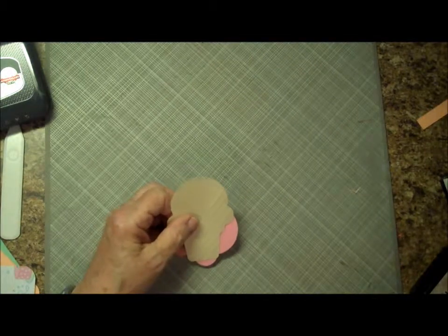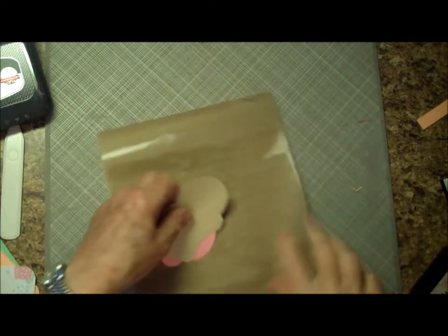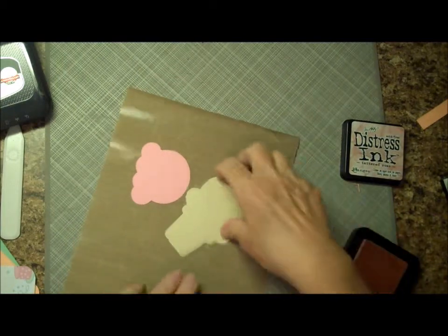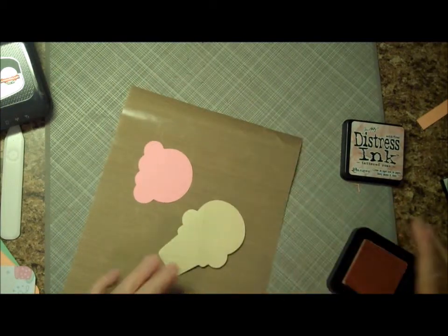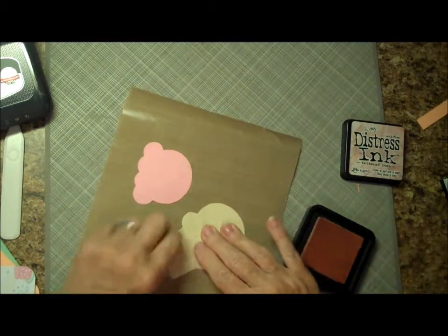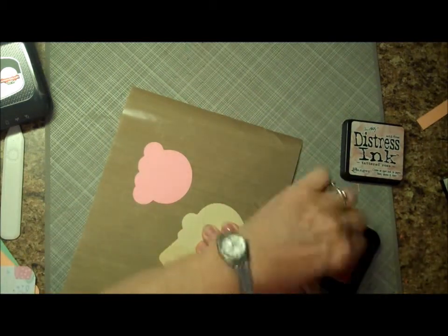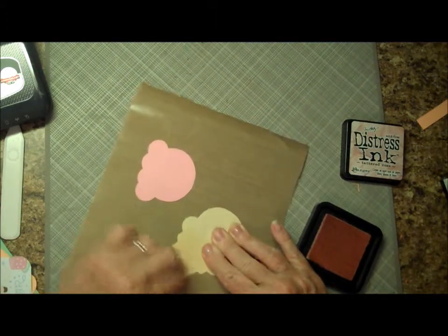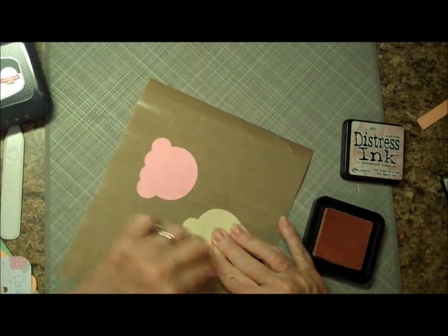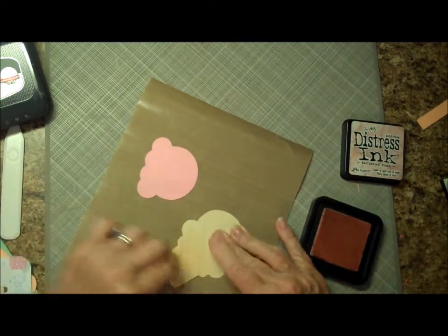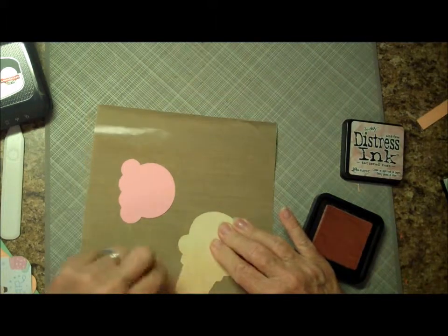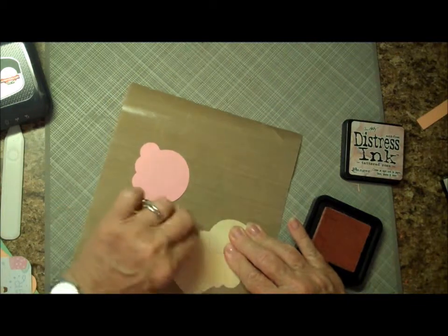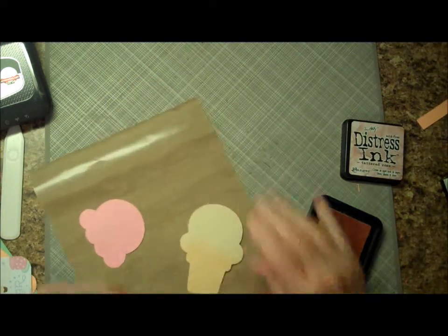But what I'm going to do now is to take some Tim Holtz Distress Ink and just put a little bit of it on this raised area. And I'm using the side where it's raised. And by putting this Distress Ink on there, it just shows those grooves up just a little bit more. This is Tattered Rose, so it's a very light shade.